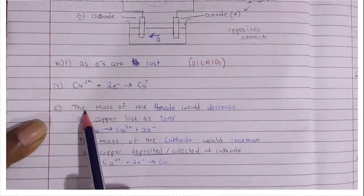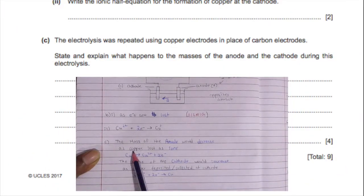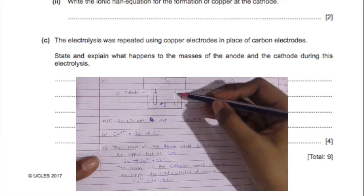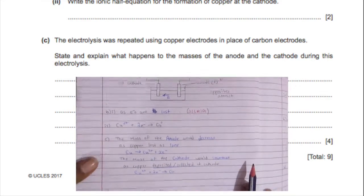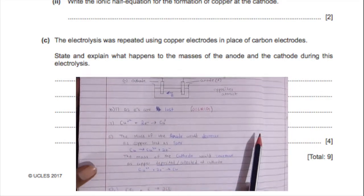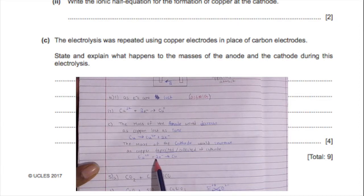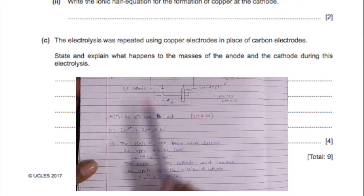Now what happens in the cathode is the copper 2+ ions gain two electrons. Again, the cathode is negative and that would give you copper with a zero at the top, but you don't have to add that of course. Now if you repeat this with carbon electrodes, the mass of the anode would decrease as the copper is lost as ions.